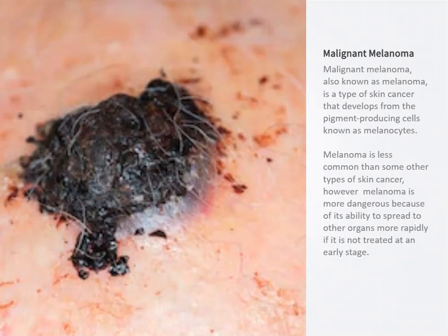Malignant melanoma is a rapidly progressing metastatic form of cancer involving the melanocytes. Early recognition of the tumor is essential because the patient's chance of survival is increased with early treatment.